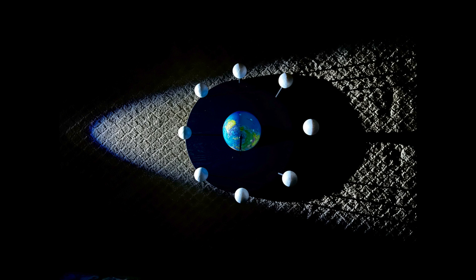Remember, we see moon phases because half of the moon is always lit up. The moon phase just depends on how much of that lit up side we can see from our position on Earth.